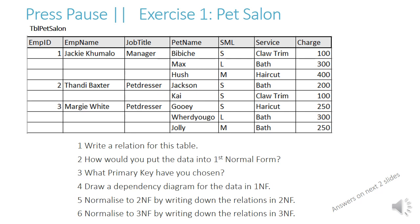The questions are: 1. Write a relation for this table. 2. How would you put the data into first normal form? 3. What primary key have you chosen? 4. Draw a dependency diagram for the data in 1NF. 5. Normalize to 2NF by writing down the relations in 2NF. 6. Normalize to 3NF by writing down the relations in 3NF.